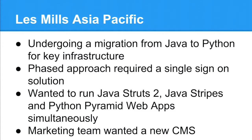A few years ago we had a large codebase of Java code, and a decision was made to migrate off Java and move to Python. We had to migrate a bunch of Struts web applications, Java Stripes, and a content management system called OpenCMS to this new technology. During this process we decided to go with Drupal as the CMS. We wanted it to be a transitional process - running our legacy Struts web applications alongside new Pyramid web applications and this new Drupal instance, sharing authentication and attribute information across all platforms.